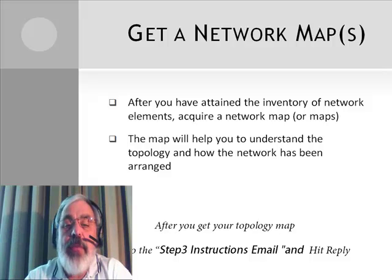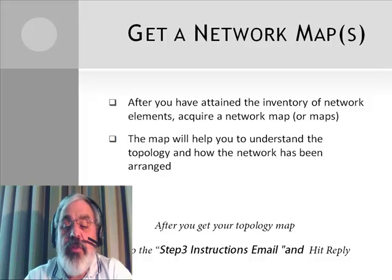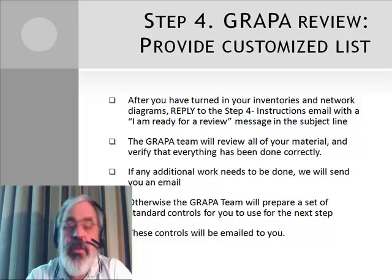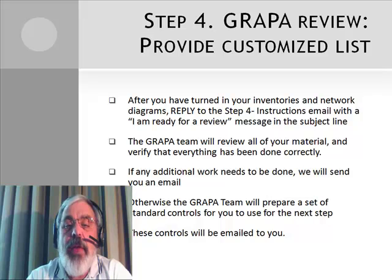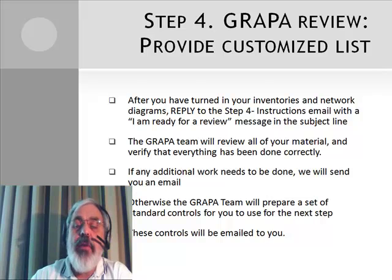After you've done the inventory, the next step is to get a network map. You're going to be best off talking to the network engineers and having them give you maps of what they currently have — they have plenty of diagrams for their topology. Get some useful topology diagrams, attach those to the Step 3 instructions email, and hit reply as well. Now that we've got your inventory and your map, the GRAPA team will review your environment and prepare for you a customized controls list based upon your environment and what we know about your situation. We will mail that to you as part of Step 5.